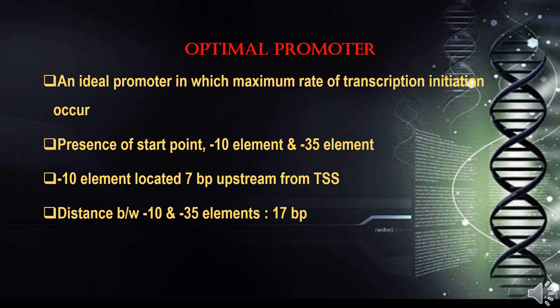The optimal promoter is an ideal promoter in which the maximum rate of transcription initiation occurs. It has the following features: presence of a start point, a minus-10 element, and a minus-35 element. The minus-10 element is located 7 base pairs upstream from the transcription start site, and the distance between the minus-10 and minus-35 elements is 17 base pairs — meaning the minus-35 element is located 17 base pairs upstream from the minus-10 element.